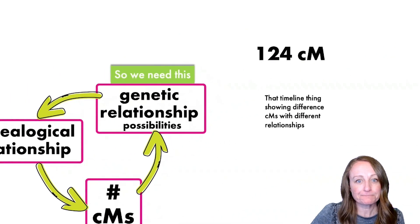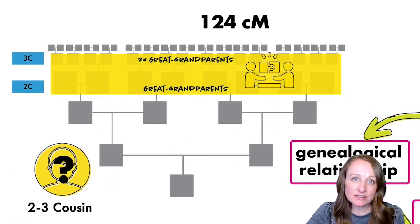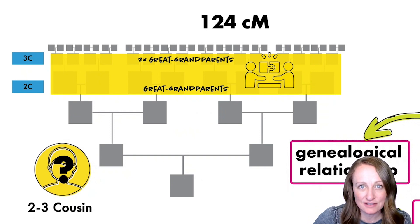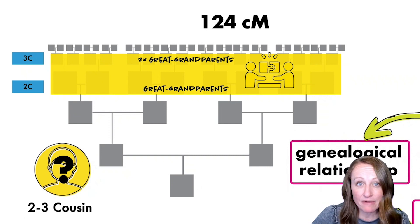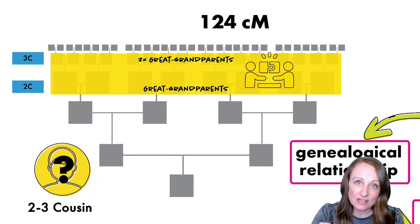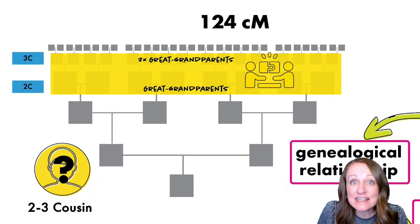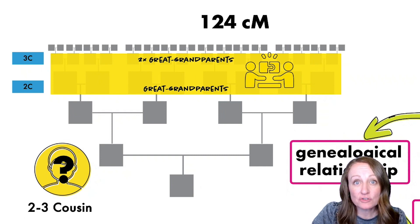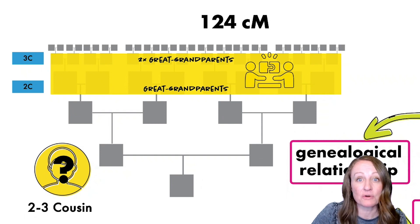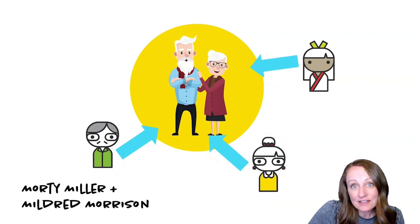For example, 124 centimorgans relates to roughly a second-to-third cousin relationship level. DNA is usually not specific about exactly how you're related — it gives an estimate and a range to work with. When you investigate your matches' trees, you're looking in that range for an ancestor common to your DNA matches. If you don't see someone you recognize on their tree, start celebrating — that person might be exactly who you need to fill in your missing ancestor.